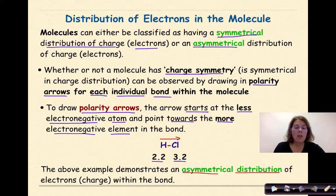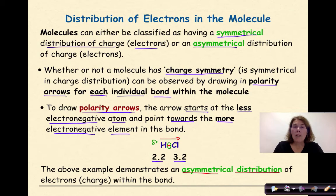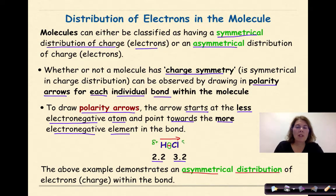Hydrogen has an electronegativity of 2.2 and chlorine has an electronegativity of 3.2. So I'm going to draw my polarity arrow starting at the hydrogen and pointing it towards the chlorine. This shows an asymmetrical distribution of charge within the bond itself, because those electrons are getting pulled more towards chlorine — not 100% transferred like an ionic bond, but definitely closer to the chlorine atom. This means hydrogen now has a slightly positive charge, while the chlorine, being more electronegative, has a slightly negative charge associated with it.